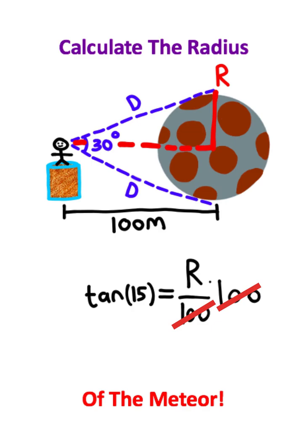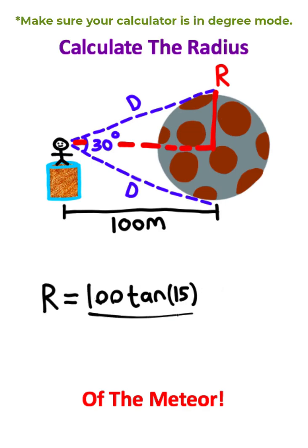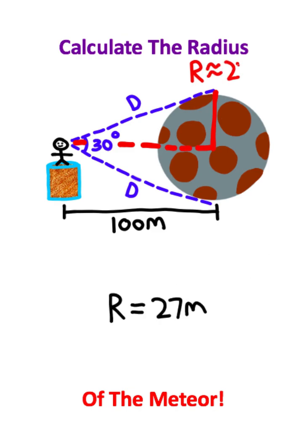From here I can multiply both sides of this equation by 100 meters. And if you take 100 and multiply it by the tangent of 15, you should get an approximate value of 27 meters. So the radius of this meteor is about 27 meters, and this is the solution to the problem.